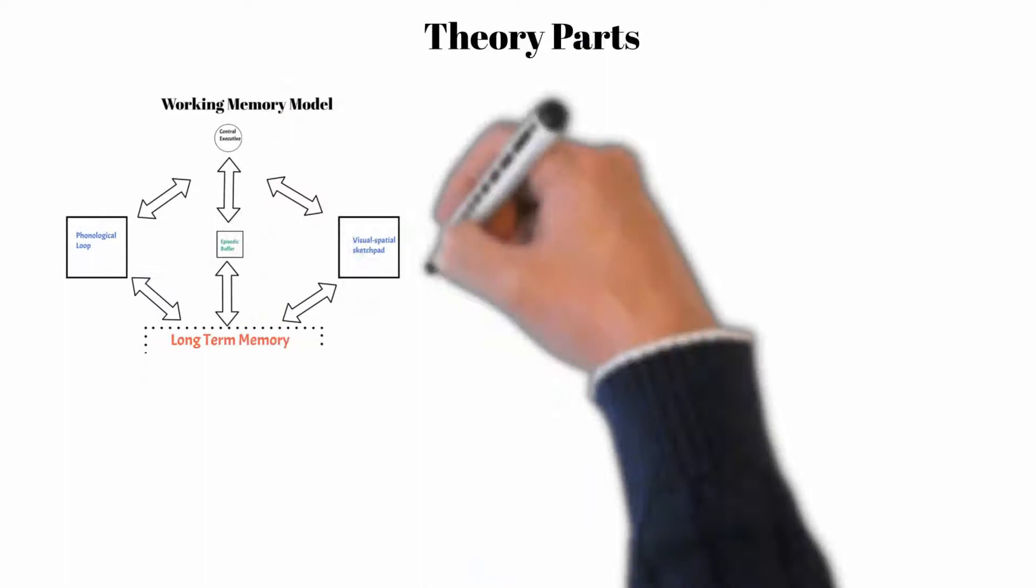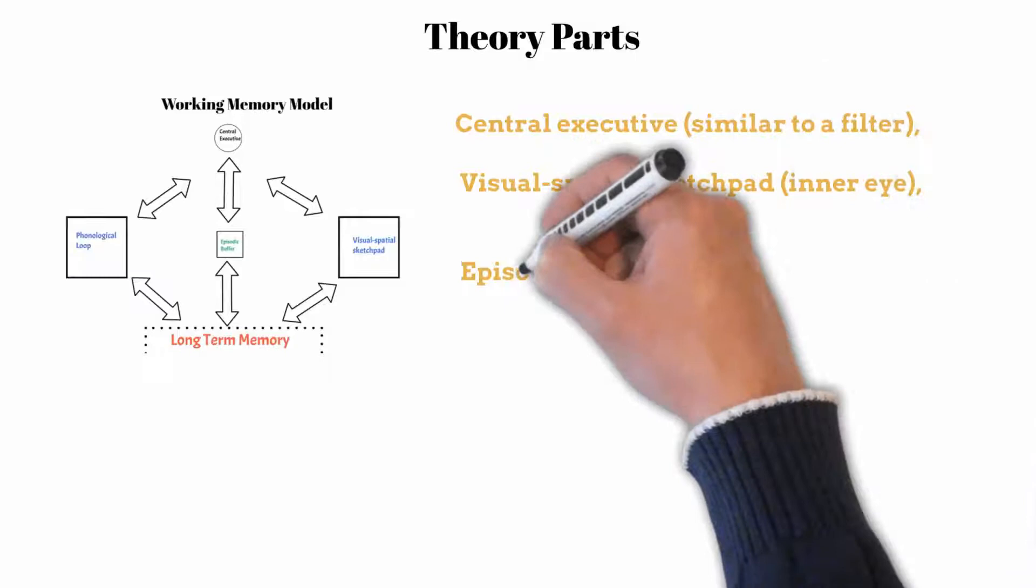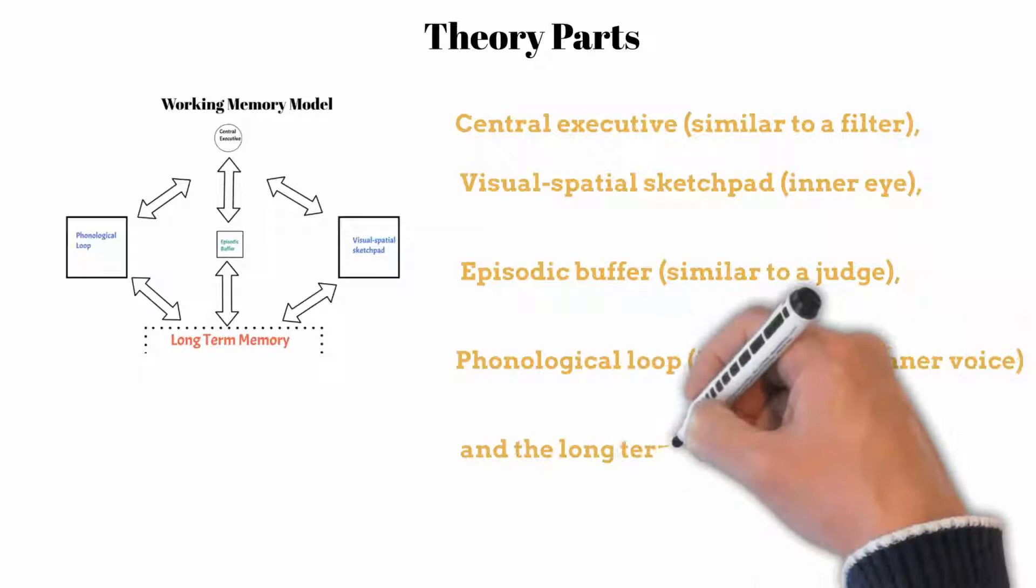Here are the areas with short summaries of their functions. The central executive, similar to a filter. The visual spatial sketchpad, inner eye. The episodic buffer, similar to a judge. The phonological loop, inner ear and inner voice. And the long-term memory, storage for key long-term information.